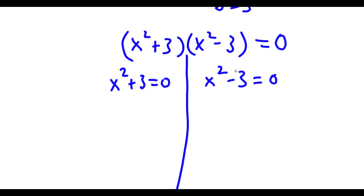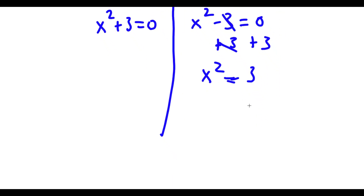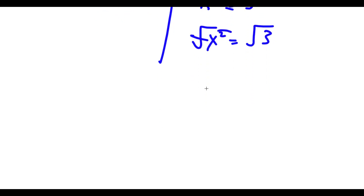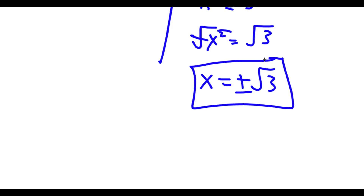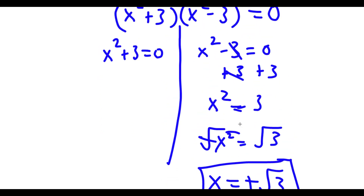Let's first start with x squared minus 3 equals 0. To solve this, I'm going to add 3 on both sides — these cancel out — and now I have x squared equals 3. I want to get rid of the square, so I'll take the square root on both sides. These cancel out, and I'm left with x equals plus or minus the square root of 3. So this is two solutions of x.